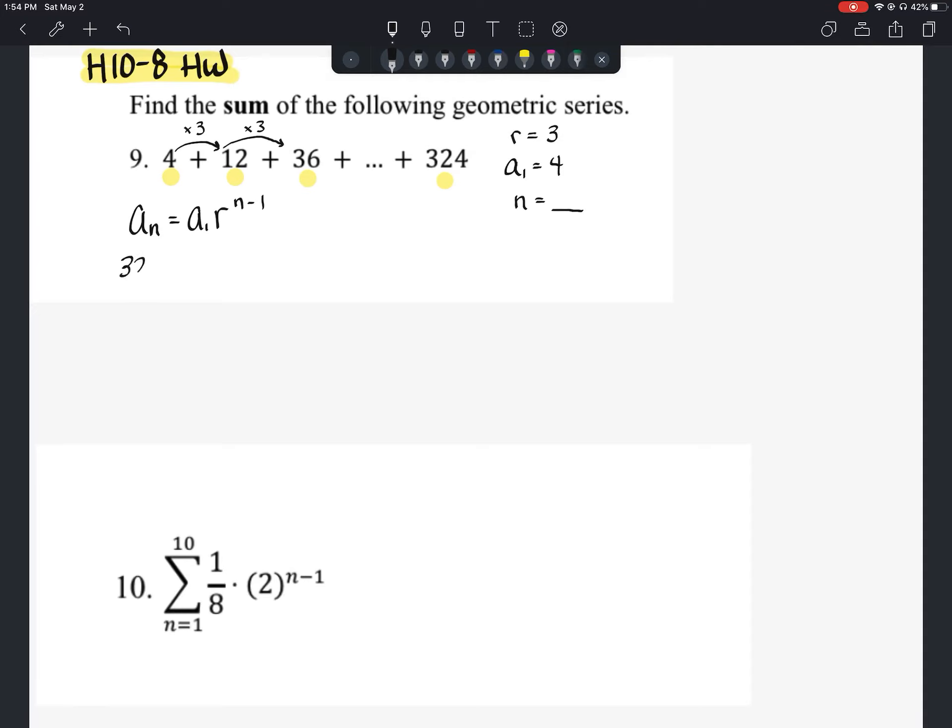So we'll throw 324 in and we'll say that's going to equal 4 times 3 to the power of n minus 1. And now let's just solve it for n.